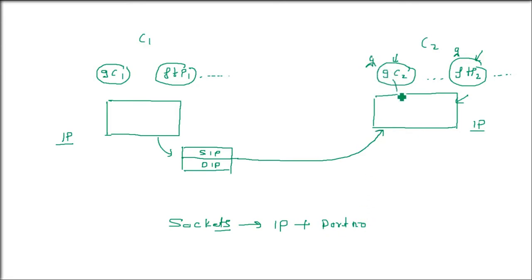So IP and port number combined, along with certain protocol, this is sockets. For example, FTP has 21, so if this 21 is fixed with that IP, it will directly go to the file transfer.